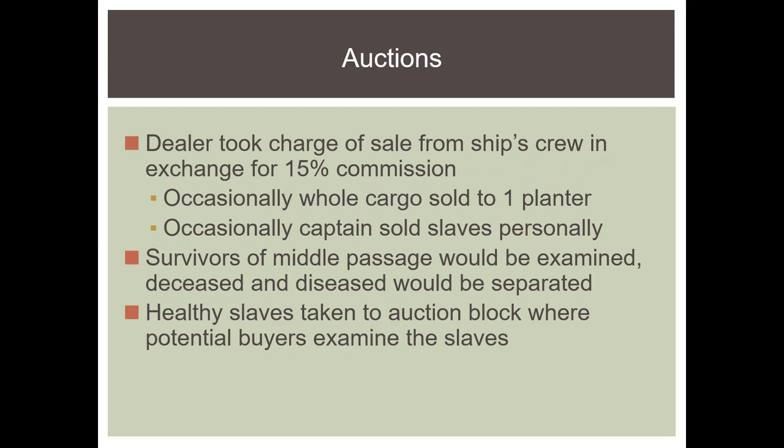Healthy slaves were taken to a public auction block. Potential buyers examined their teeth and their body; the back was often checked for lash marks. Women were examined to determine if they could produce offspring. Some slaves were required to run and jump to prove their usefulness, and children were asked to do the same. Many buyers preferred a mix of ethnic groups, out of fear of slave rebellion — if too many people were from one ethnic group or spoke a similar language, slave owners were afraid rebellion could happen.